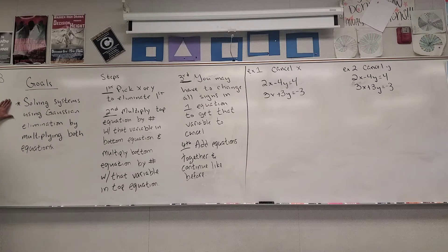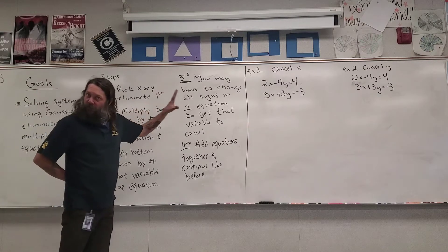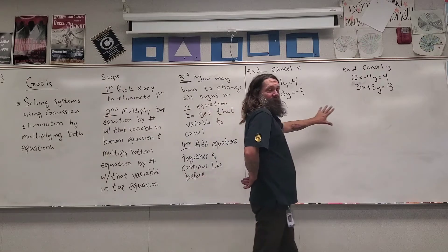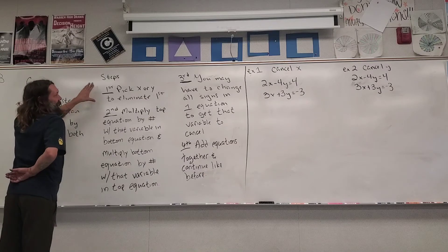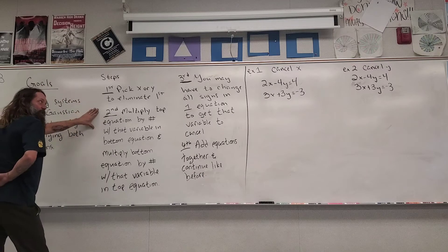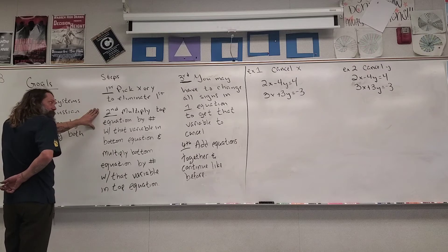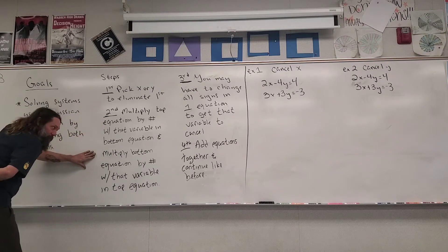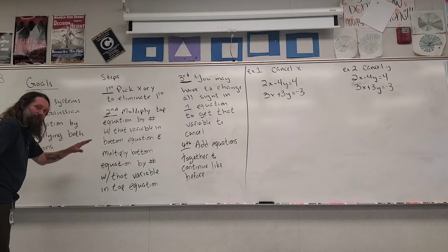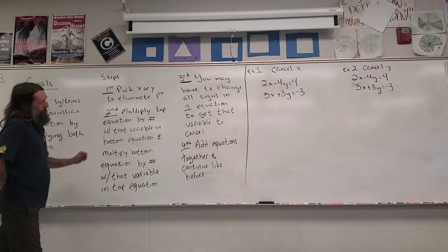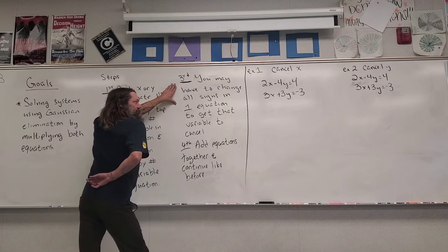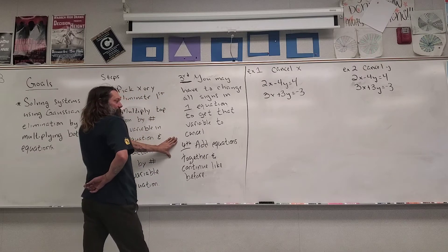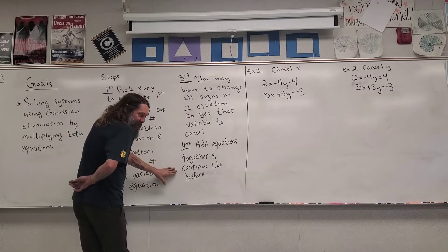Our goal is to solve systems using Gaussian elimination by multiplying both equations. I wrote out the steps we need to follow. Our first step is to pick the x or y to eliminate first. Our second step is to multiply the top equation by the number with that variable in the bottom equation, and multiply the bottom equation by the number with that variable in the top equation. Our third step is that you may have to change all the signs in one equation to get that variable to cancel. And our fourth step is to add the equations together and continue like before.